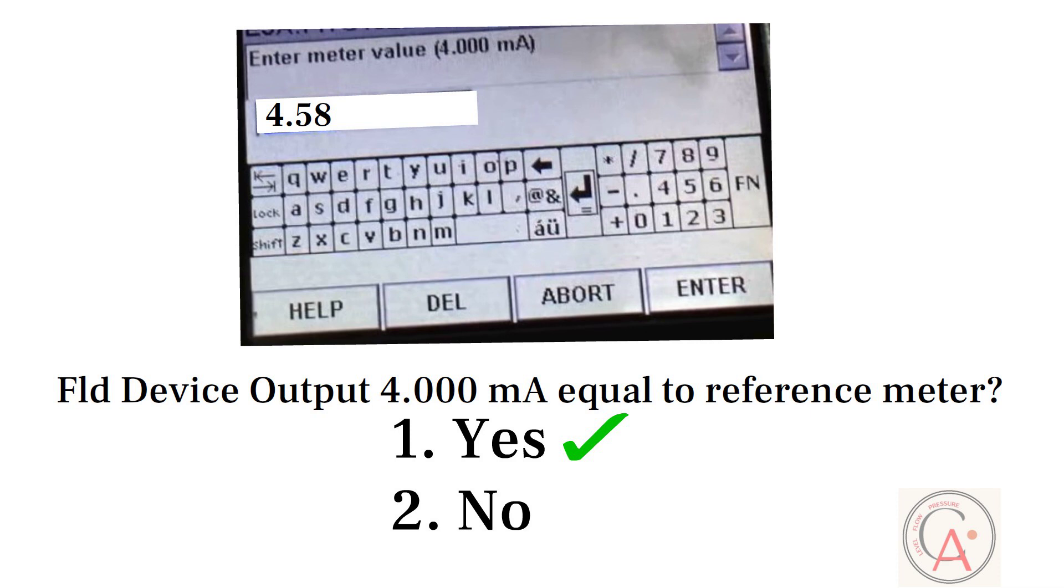Once 4 milliampere is set, now it's time to check 20 milliampere's value of transmitter.